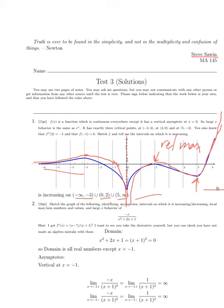For question 2, we're looking at this function. We wanted to sketch the graph, including asymptotes, intervals in which it's increasing or decreasing, local maxes and mins, and the large x behavior. For the domain, we ask where is the denominator equal to zero? That happens at x equals -1, so we've got a vertical asymptote at x equals -1.